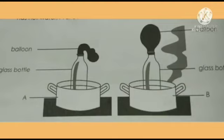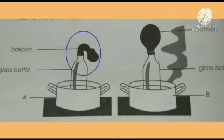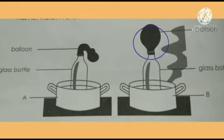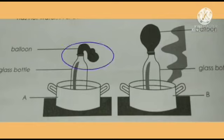Let us do one activity — you should do this with the help of your parents. Put a balloon on the neck of a bottle and keep that bottle in a pan of boiling water. The balloon will increase in size. If we keep the bottle in a pan of cold water, there will be no change in the size of the balloon, because warm air takes more space than cold air.